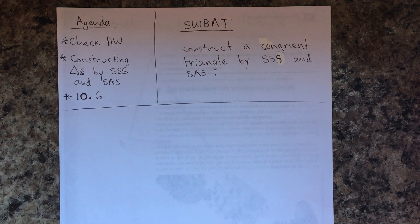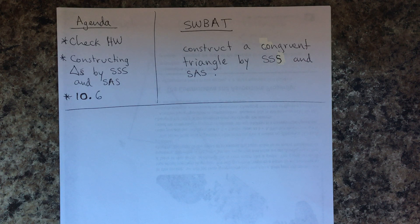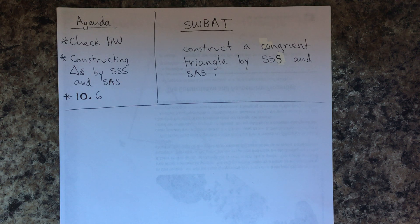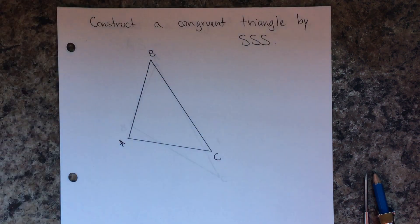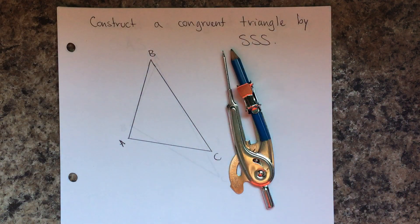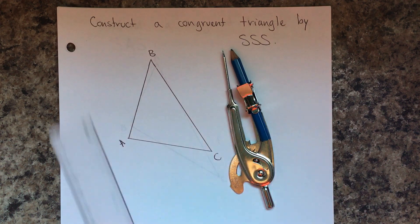Hello students. Today's agenda is to check homework. We'll be constructing triangles by side-side-side and side-angle-side, and you will be able to do section 10.6. Today's objective: students will be able to construct a congruent triangle by side-side-side and side-angle-side.